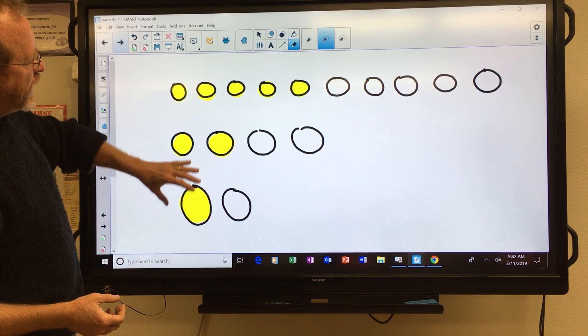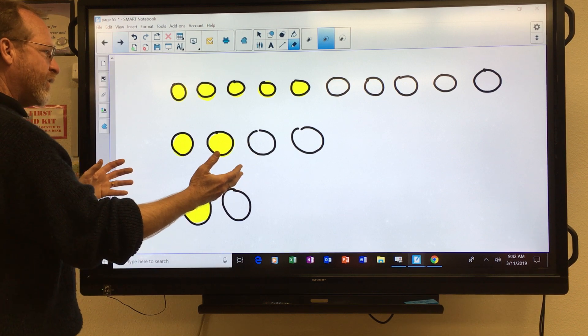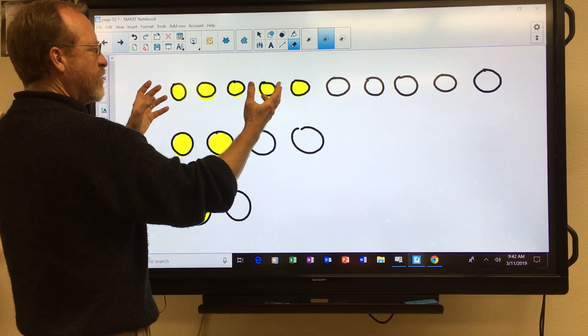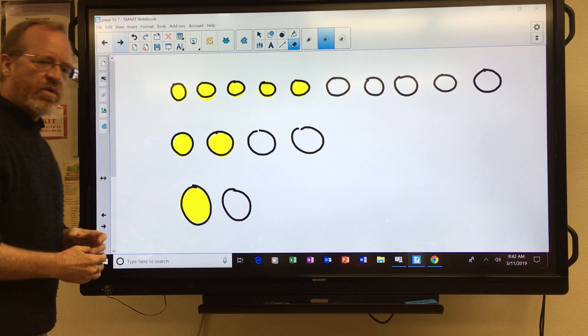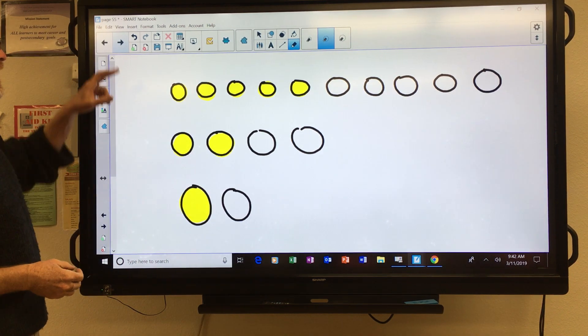And interestingly, even though I'm increasing the number of marbles, four marbles, ten marbles, here I have half, here I have half, and here I have half. So what we have going on here is equivalent fractions.